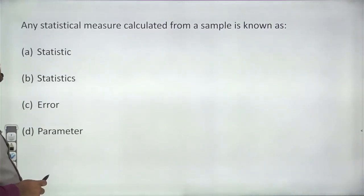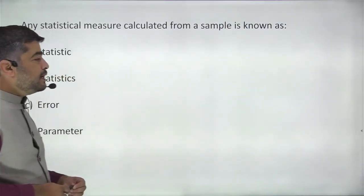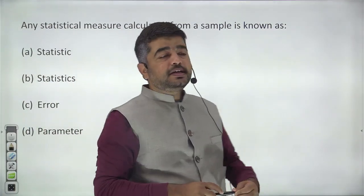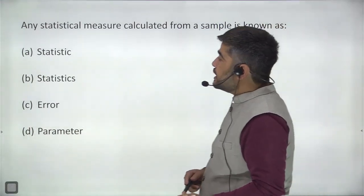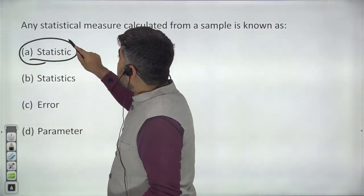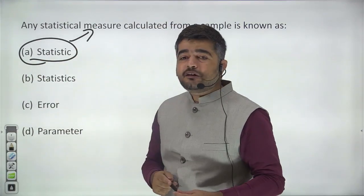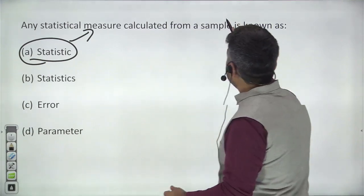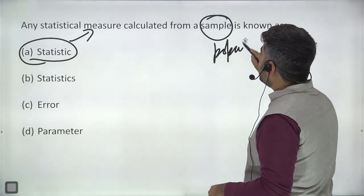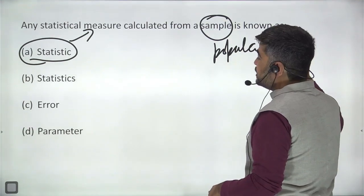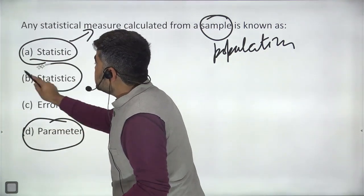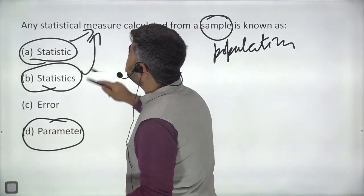Question number two: any statistical measure calculated from a sample is known as a statistic. The answer will be A. If it is calculated from the population, it will be known as a parameter.